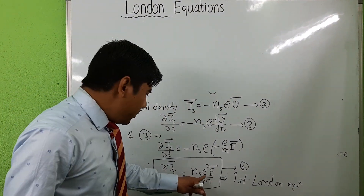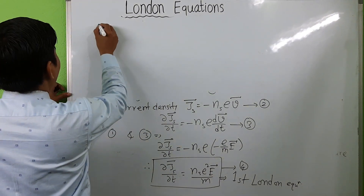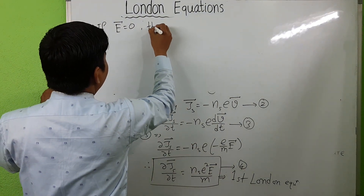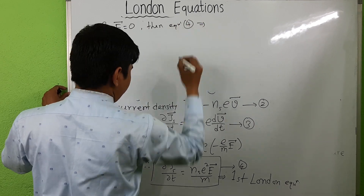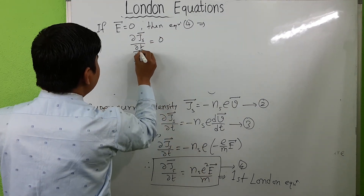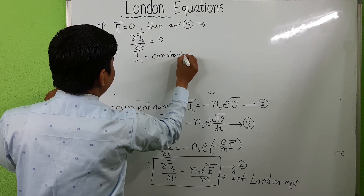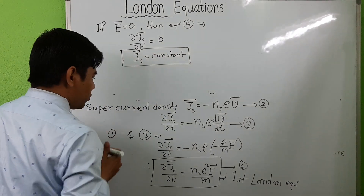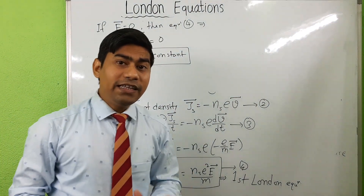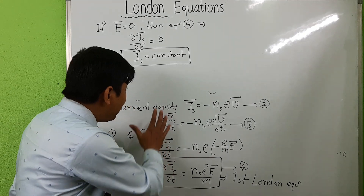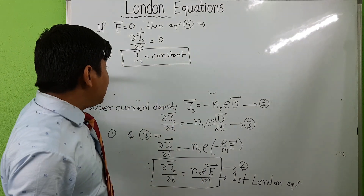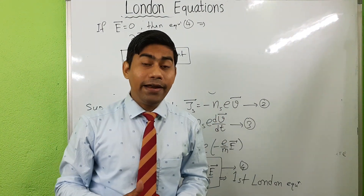Now in this equation, if the electric field E equals 0, then equation 4 becomes ∂Js/∂t = 0, or Js equals constant. So if electric field E is 0, then Js is constant. This implies that in a superconductor, if the electric field is 0, then the current density is not 0 — that is, a constant current flows inside the superconductor without an electric field.